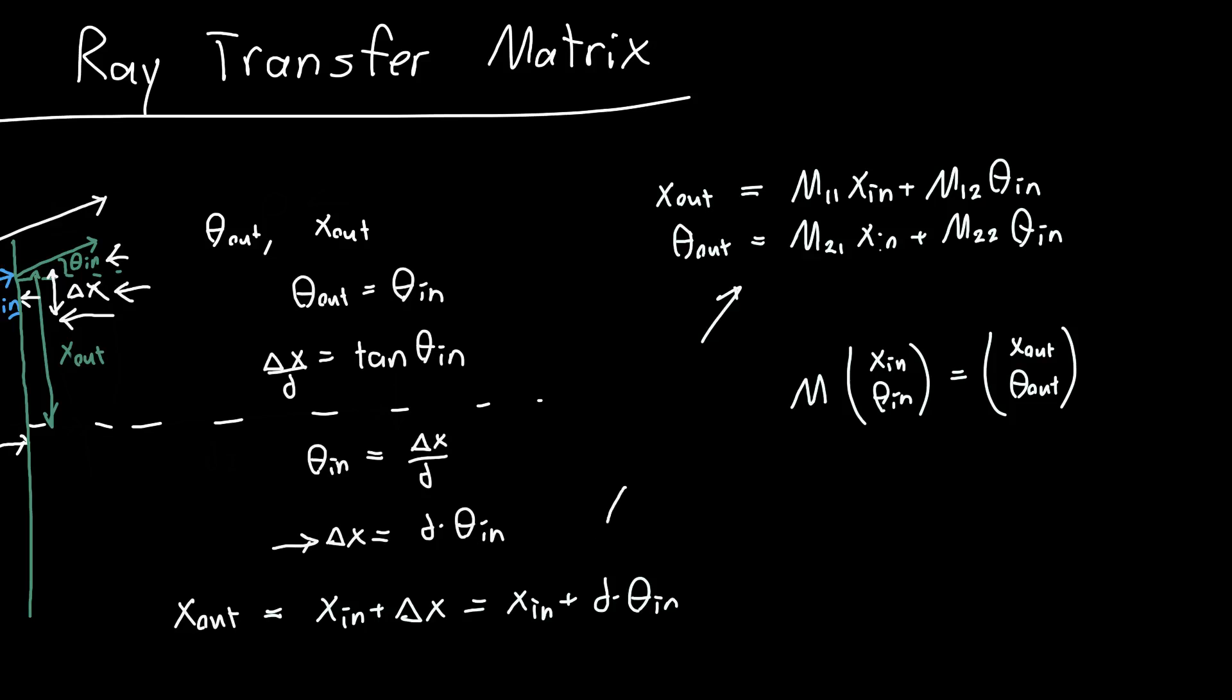And so down here we know what x out is. So x out is just 1 times x in. So this m11 has to be 1 plus d times theta in. So this m12 has to be d. And we also said that theta out was equal to theta in. So this m21 has to be 0. And this m22, this one right here, has to be 1. And so from that we can just directly reconstruct our matrix.